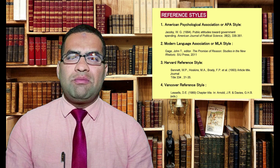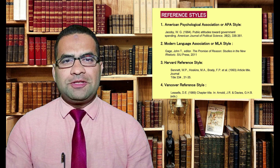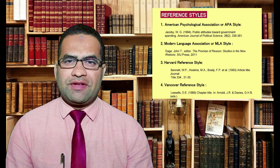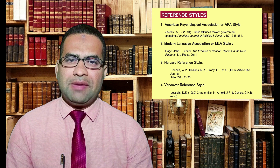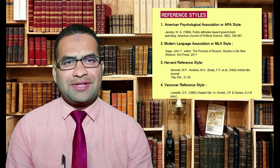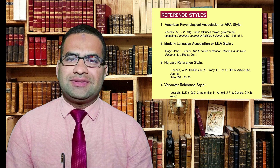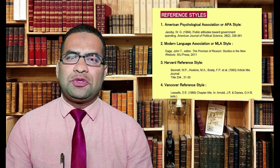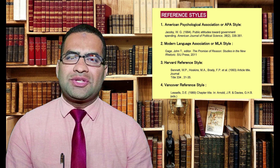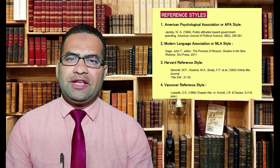Now let's talk briefly about four major referencing styles. The first is the American Psychological Association style, or APA. If there is one author, then the last name of the author with the publication year is inserted. Similarly, if two authors, then link the names with an ampersand.